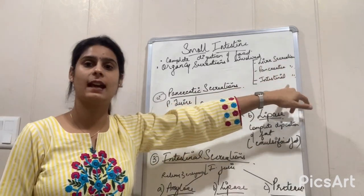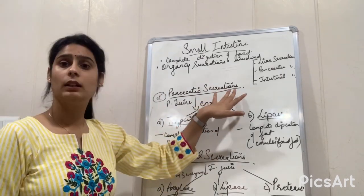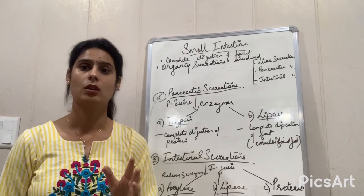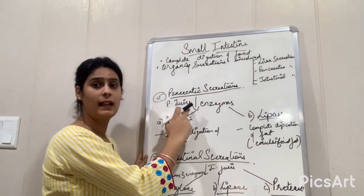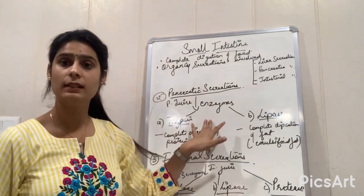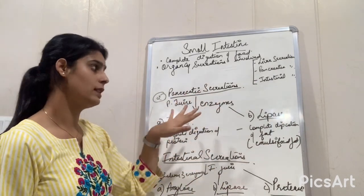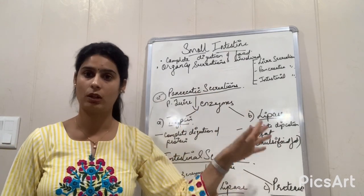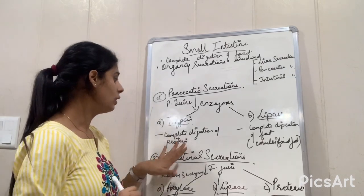Now we talk about pancreatic secretion. The pancreas secretes pancreatic juice. This pancreatic juice contains two enzymes: trypsin and lipase.